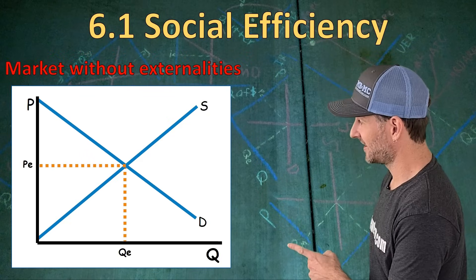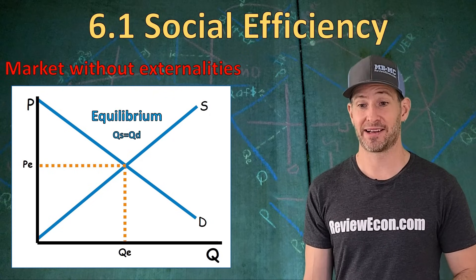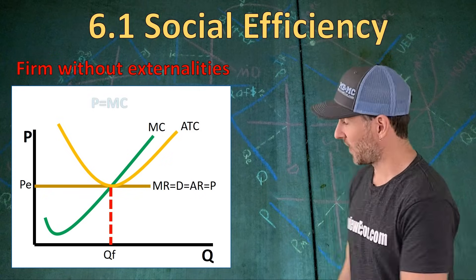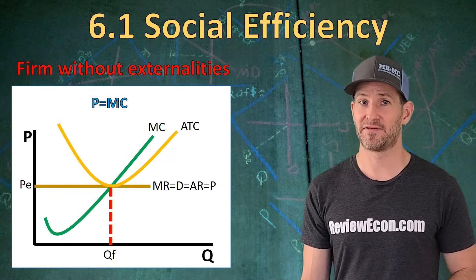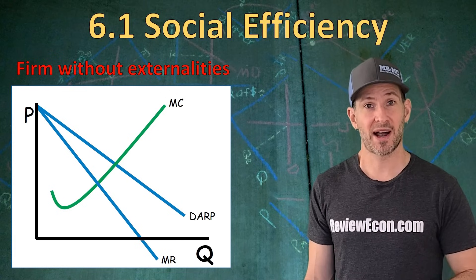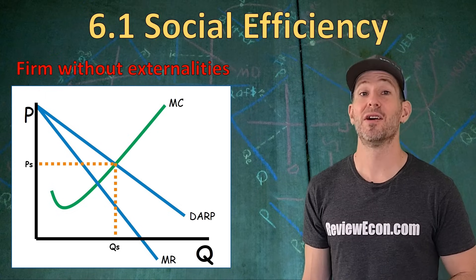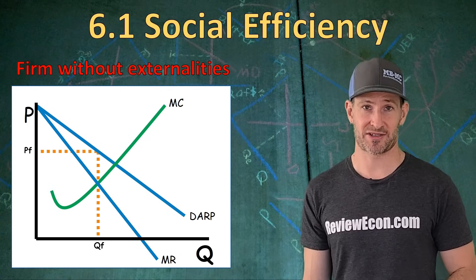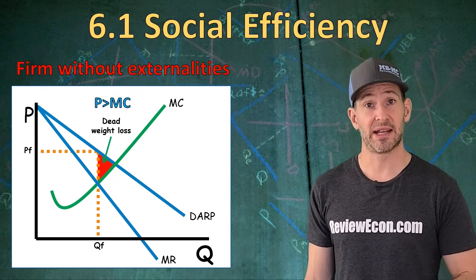We're going to quickly go over some of the places where you will see socially optimal output in graphs you've seen before. In a market with no externalities, the socially optimal output is equilibrium — that's where quantity supplied equals quantity demanded. For a firm with no externalities, marginal social cost equals marginal social benefit where price equals marginal cost. For a perfectly competitive firm with no externalities, they are always allocatively efficient because they price at marginal cost. For a monopoly or monopolistically competitive firm, price equal to marginal cost is the allocatively efficient outcome — but as you know, these firms do not price at marginal cost; they have price greater than marginal cost, and as a result there's deadweight loss.